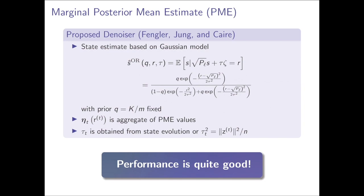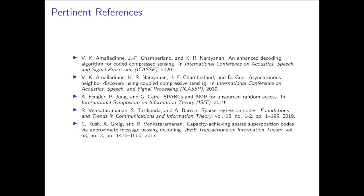They came up with the posterior mean estimate, which is essentially the expected value of a signal component, given the effective observation for that specific component. The performance of the AMP for SPARC algorithm is quite good, and it is shown to be asymptotically optimal in this context. It also invites new designs and new ideas for coded compressed sensing, which we will see in our next presentation. This concludes our survey of recent advances for coded compressed sensing.